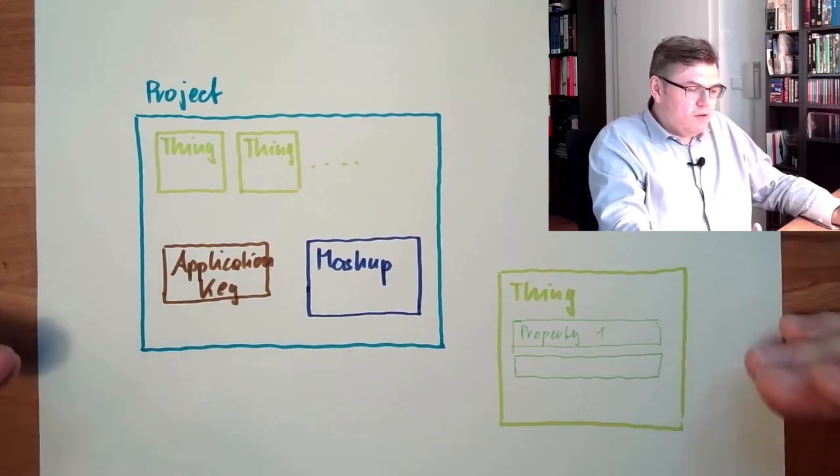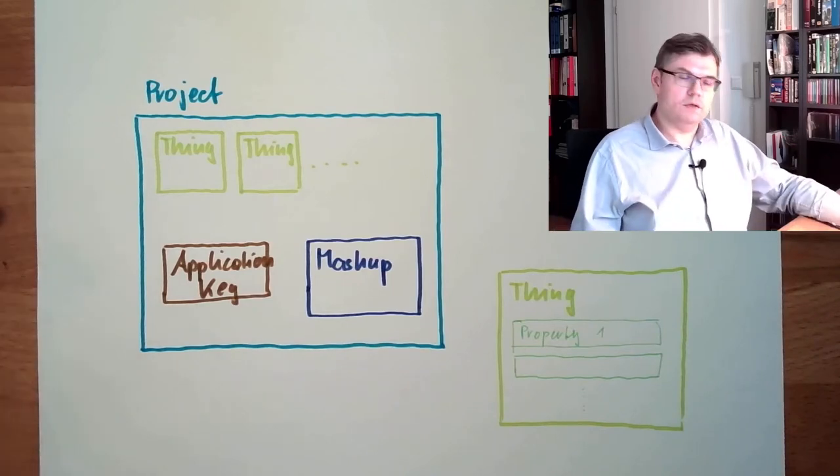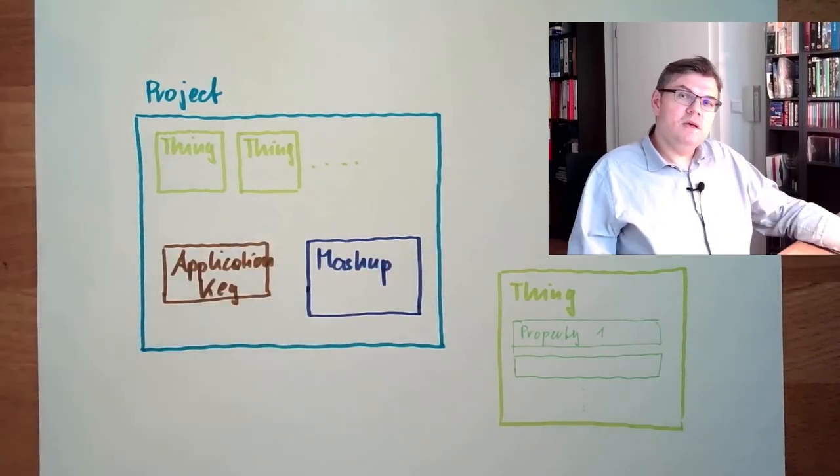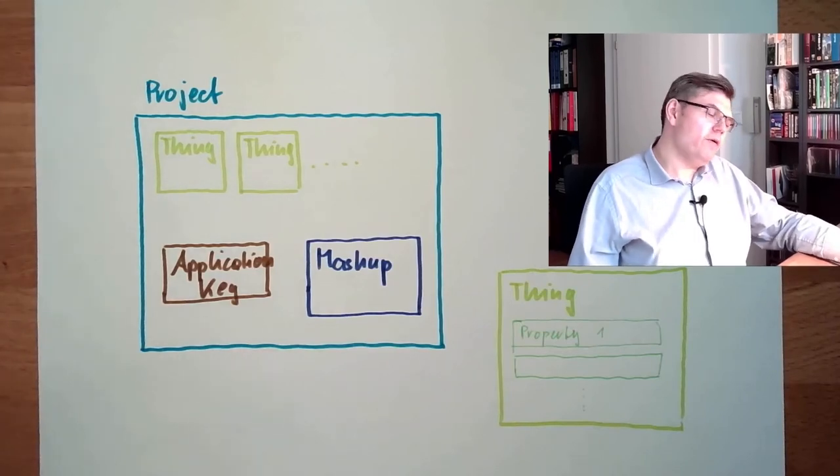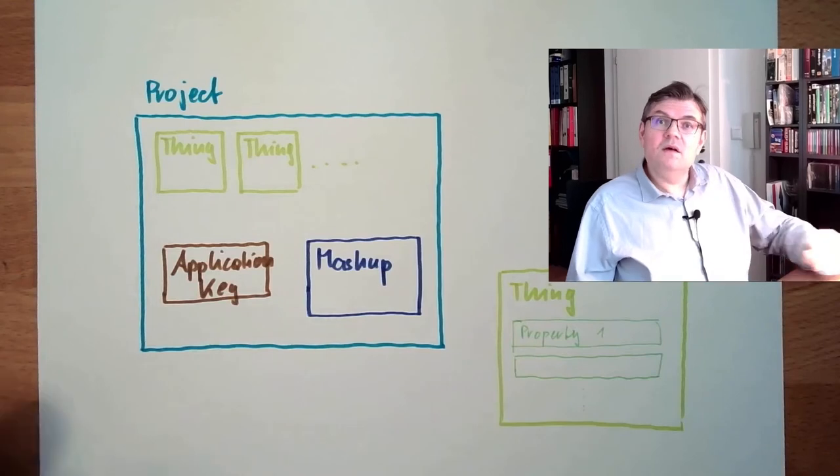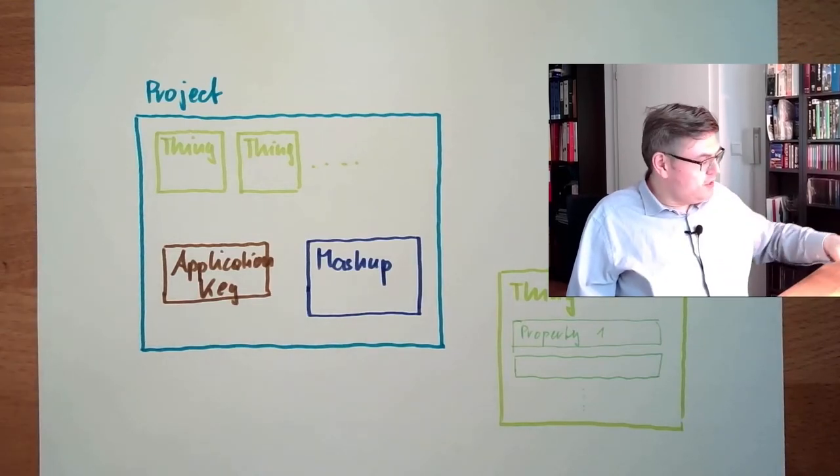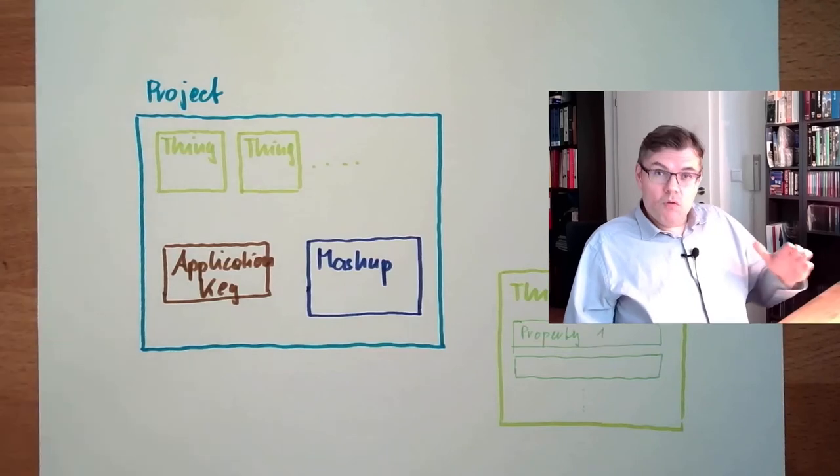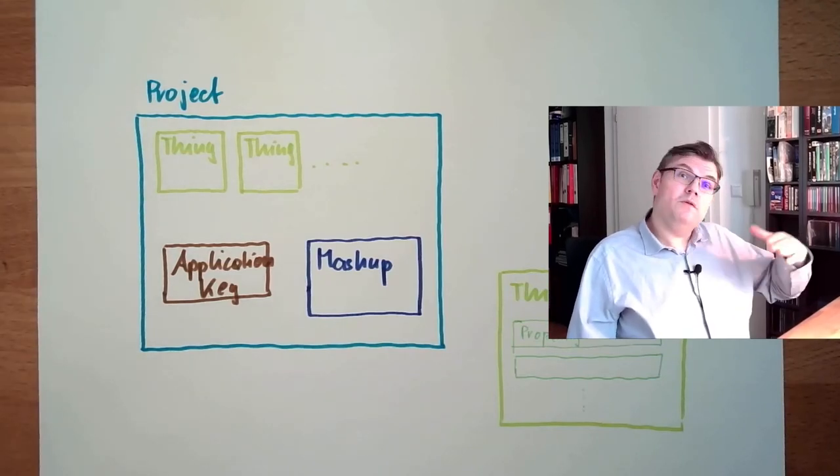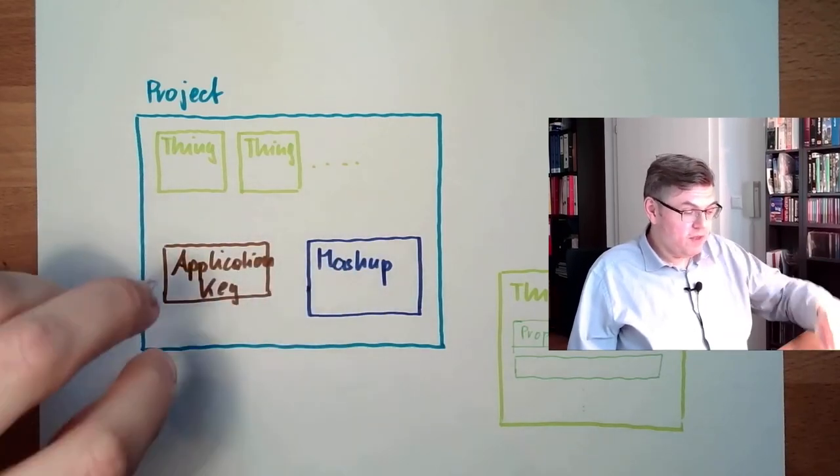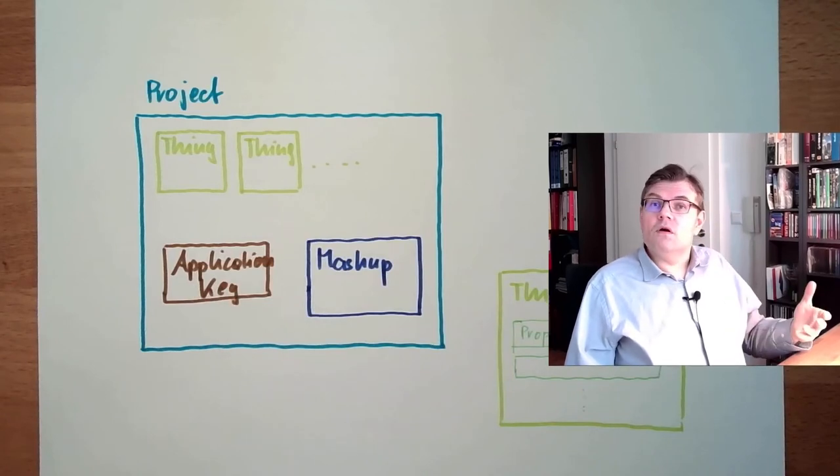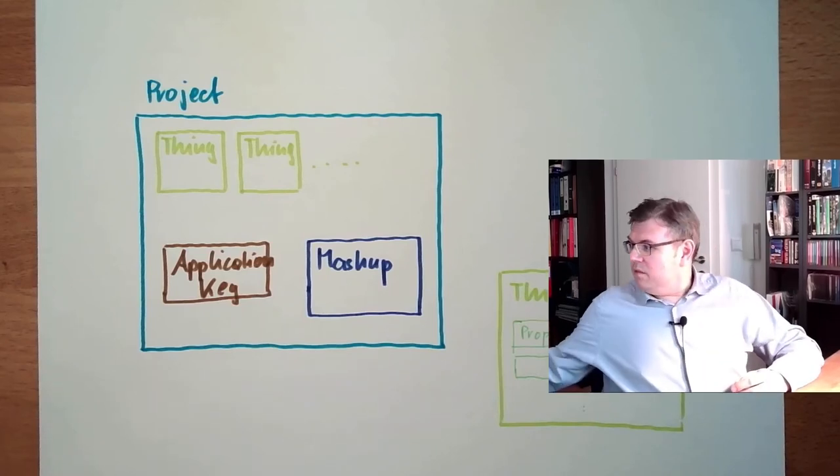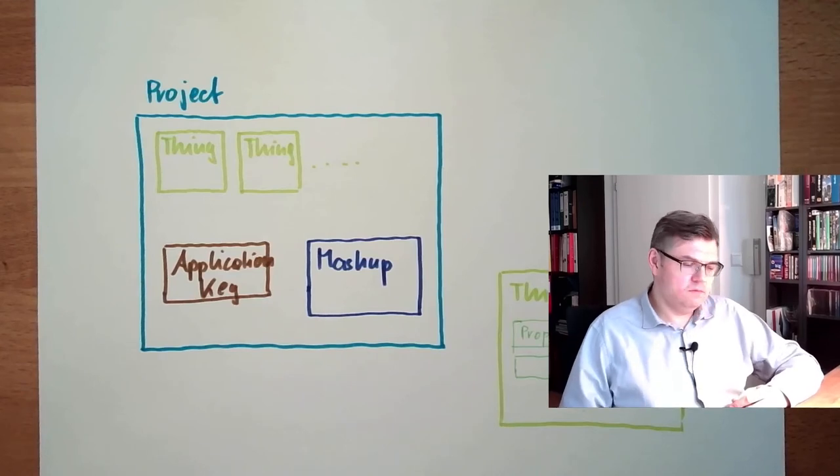This is what ThingWorx can do for us. We can add data to the project or access the things with HTTP requests. There are GET and PUT requests. We're going to talk about this. Then we can get data or put data. There are also services which can be called with HTTP requests. In order to set up a project and a thing and an application key to make it work, to collect data and provide those data to others, this would be the goal.